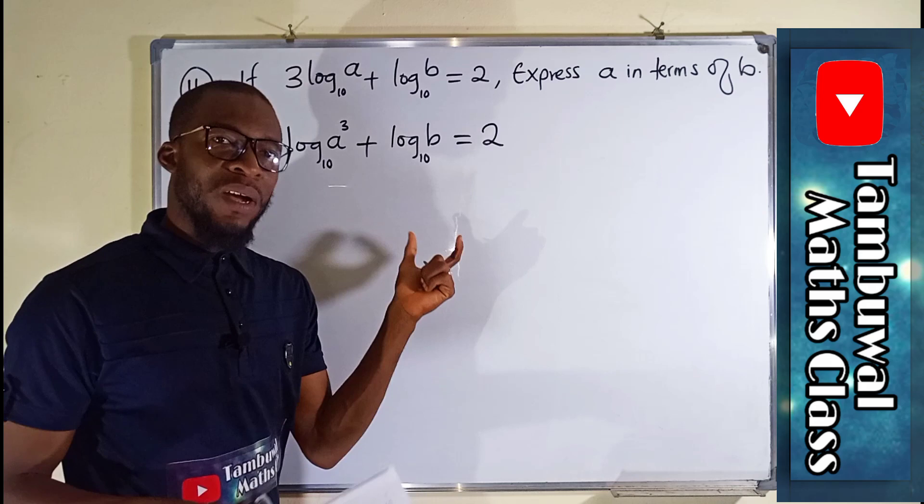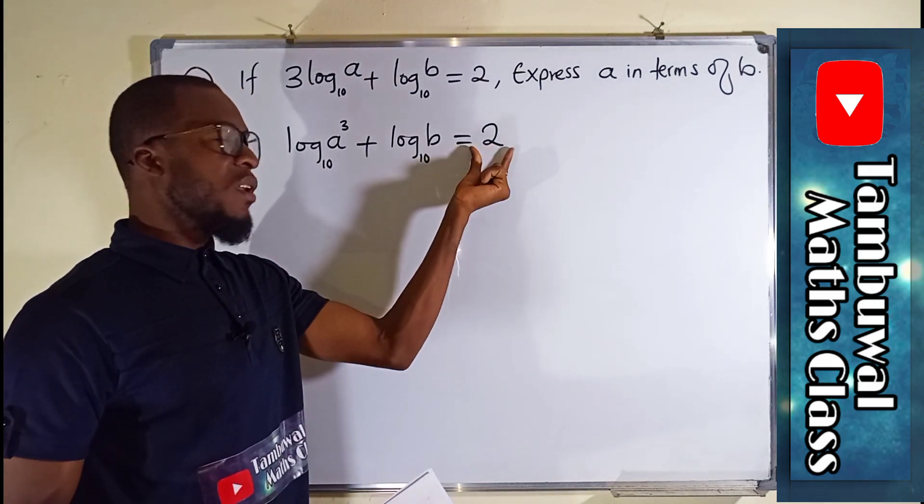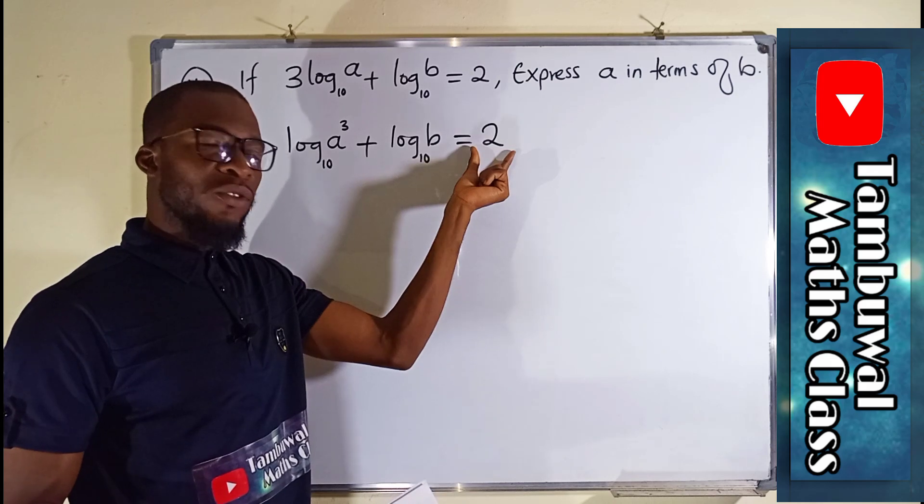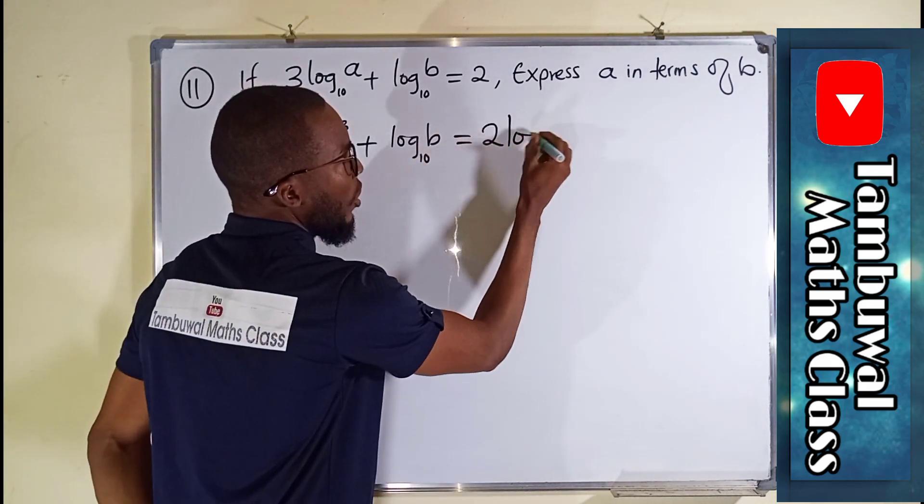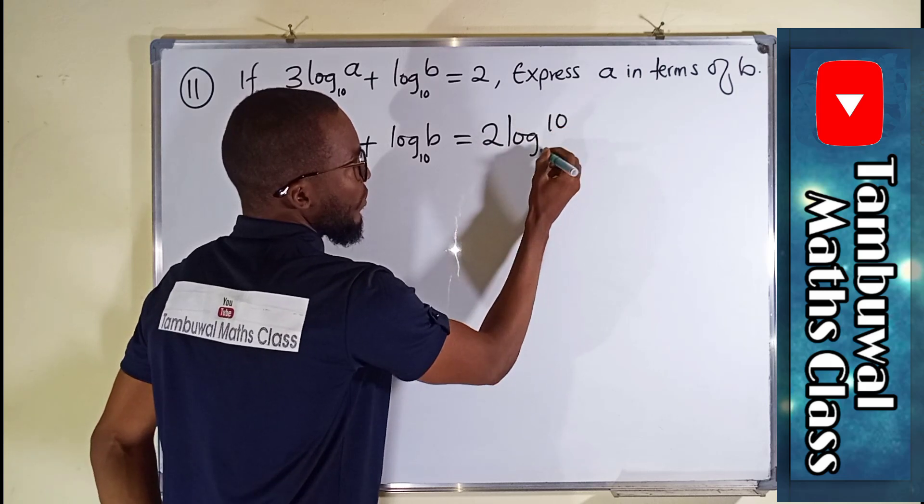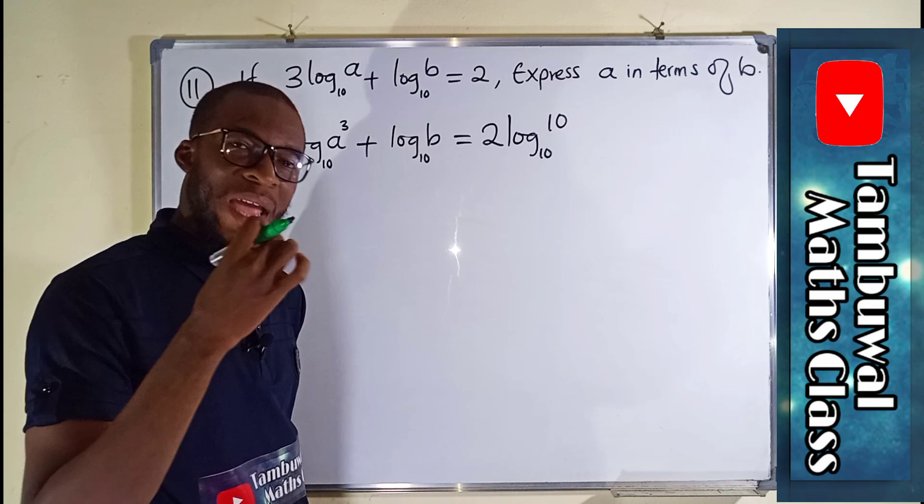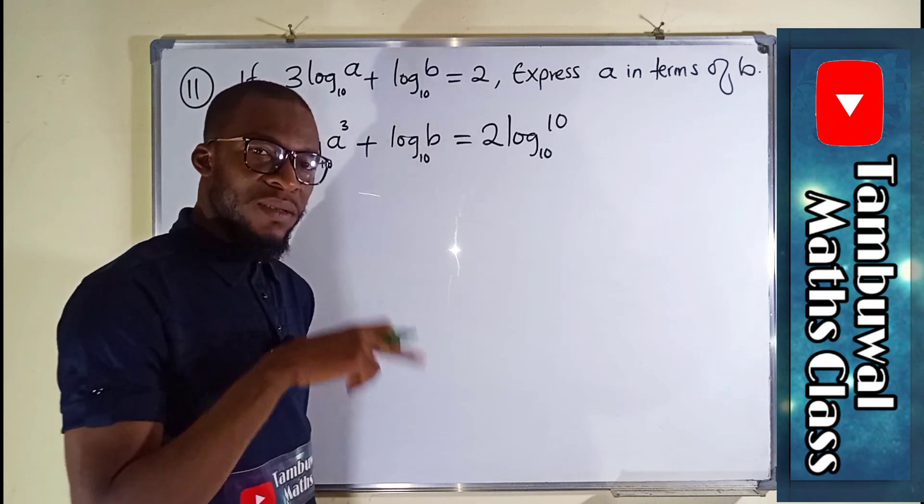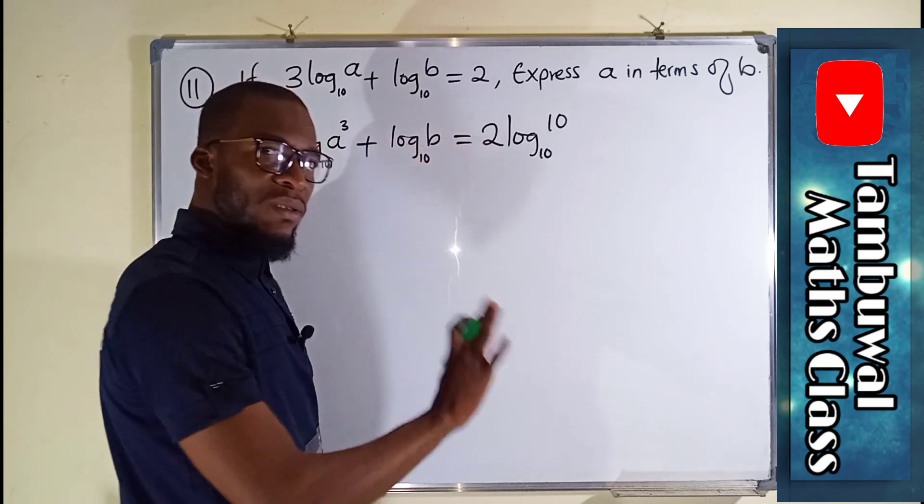But to solve this question perfectly, we have to transform each term in log form. But this is a constant. How can we transform it into log form? We can attach log 10 to the base 10. Because I told you log of any number having the same base as that number is the same thing as 1. So 1 times 2 is still 2.